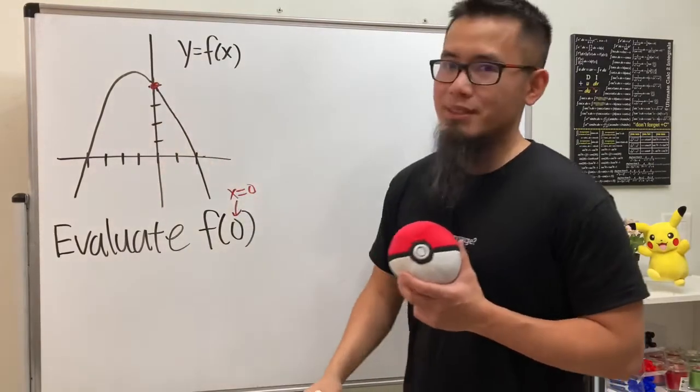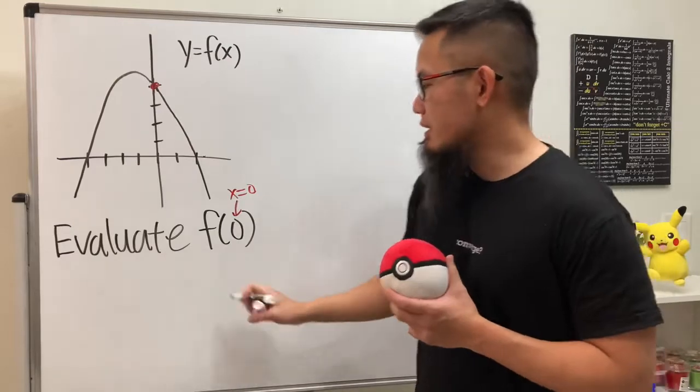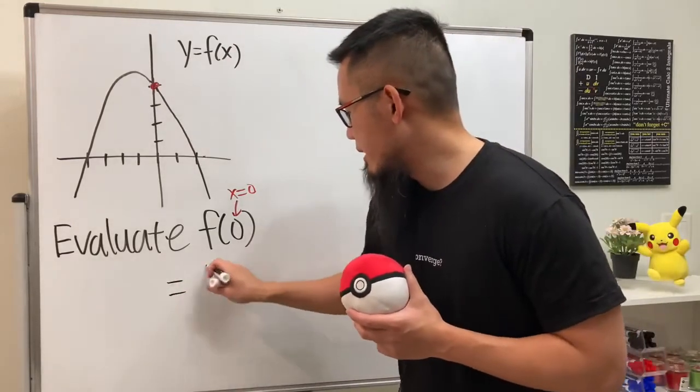Four, and we see the point. Therefore, f of zero is equal to four. Let me just put that down right here for you guys.